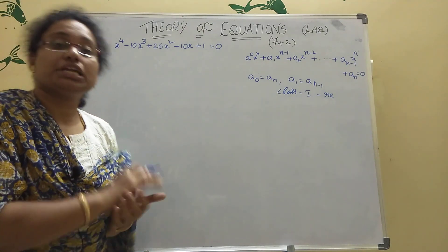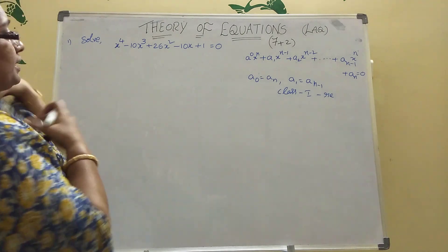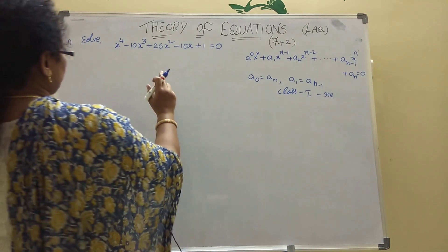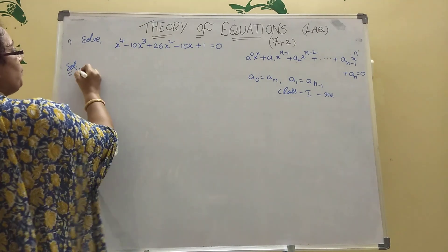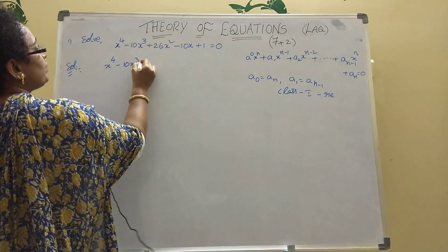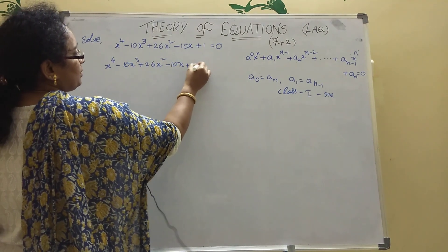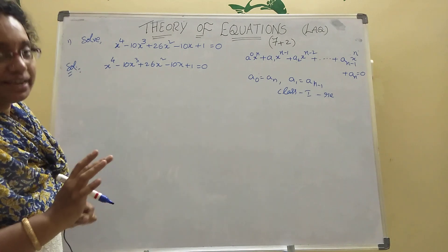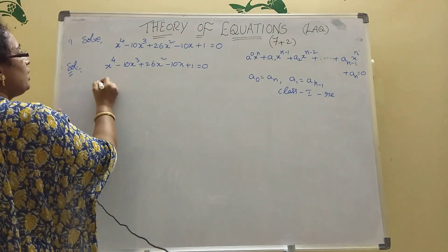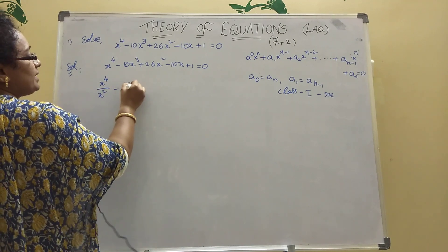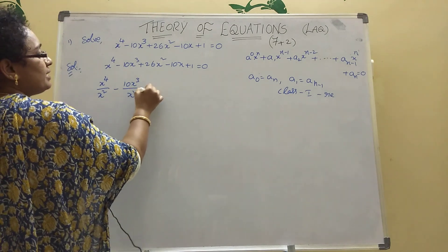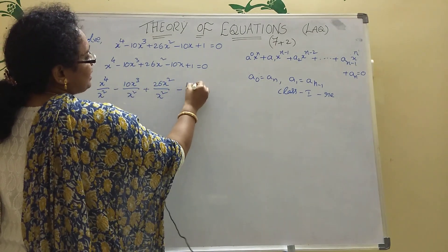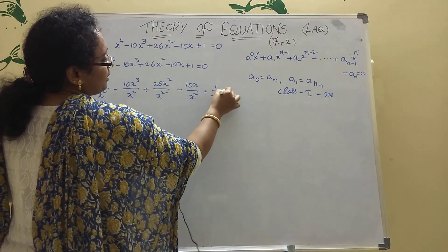For a class 1 reciprocal equation, the first step is: since x power 4 is there, divide both sides by x square. Given equation: x power 4 minus 10x cube plus 26x square minus 10x plus 1 equal to 0. Dividing every term by x square: x power 4 by x square, minus 10x cube by x square, plus 26x square by x square.